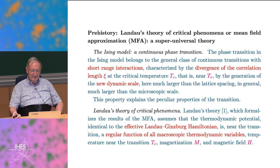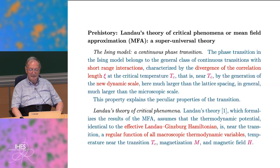The family of phenomena one has in mind are continuous phase transitions. In the Ising model and other classes of continuous transitions with short-range interactions, they are characterized by the divergence of the correlation length. Near the critical temperature, there are two lengths in the problem: one is a microscopic length—lattice spacing for the Ising model—and the other, which is vastly different, is the correlation length. When very close to the critical temperature, the correlation length is much larger than the lattice spacing.